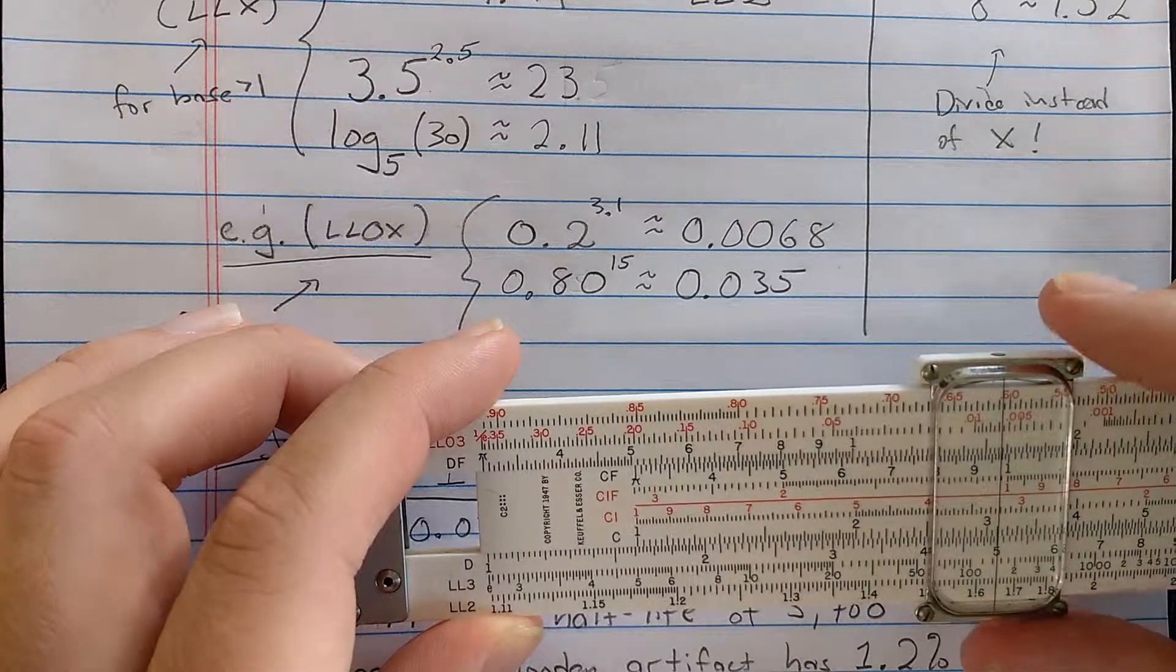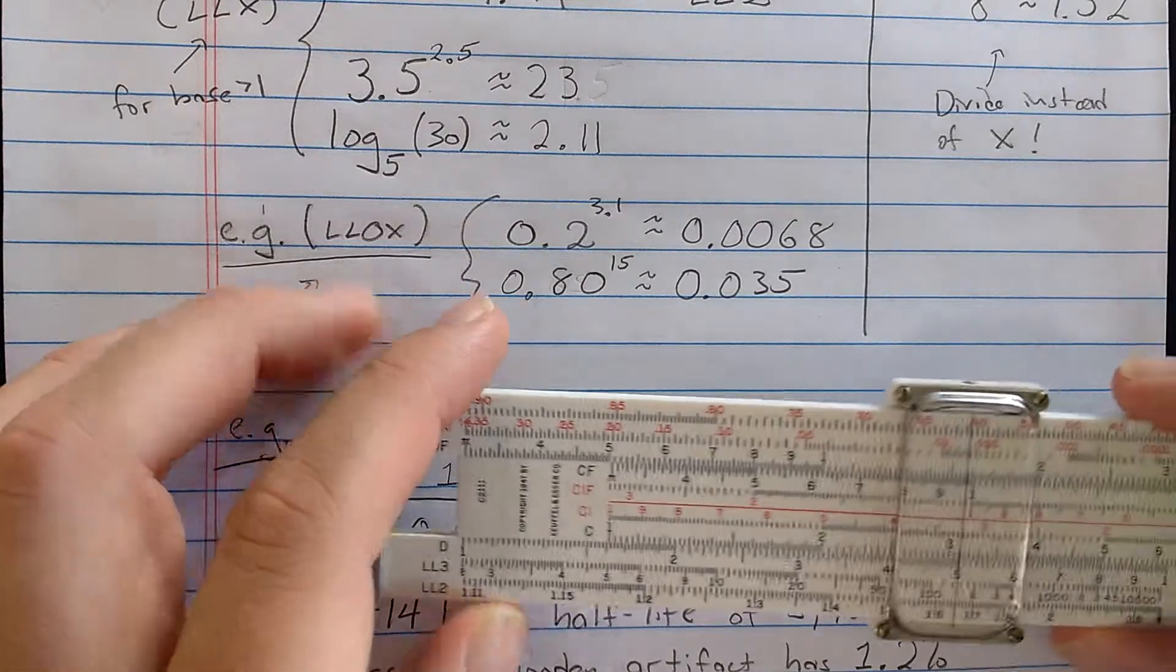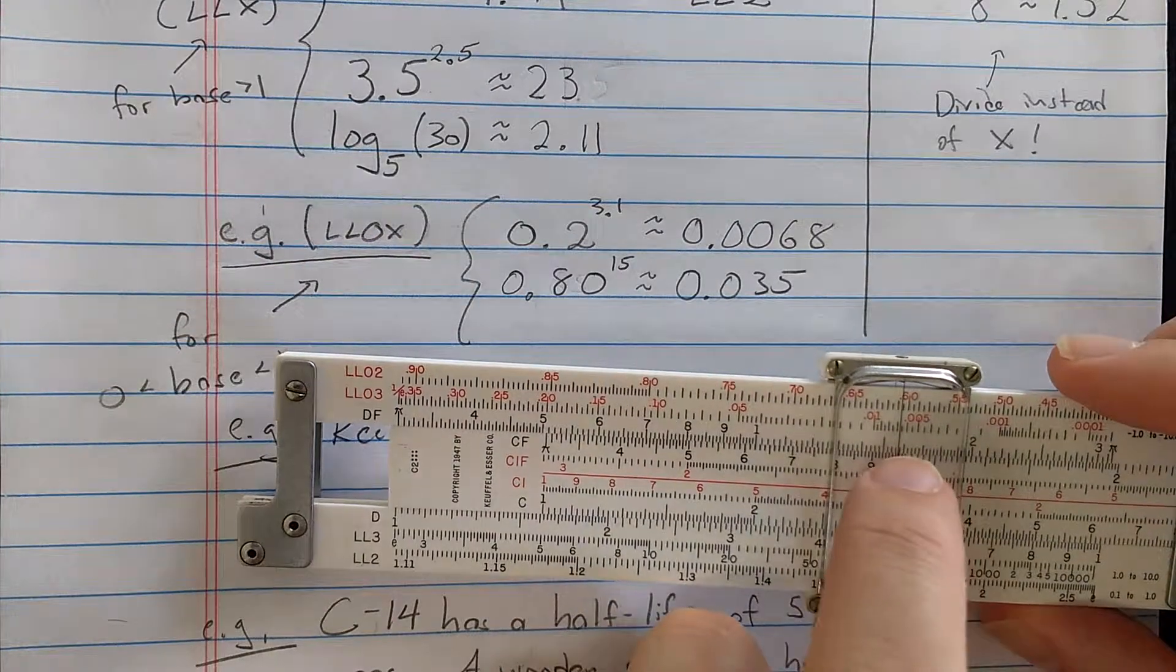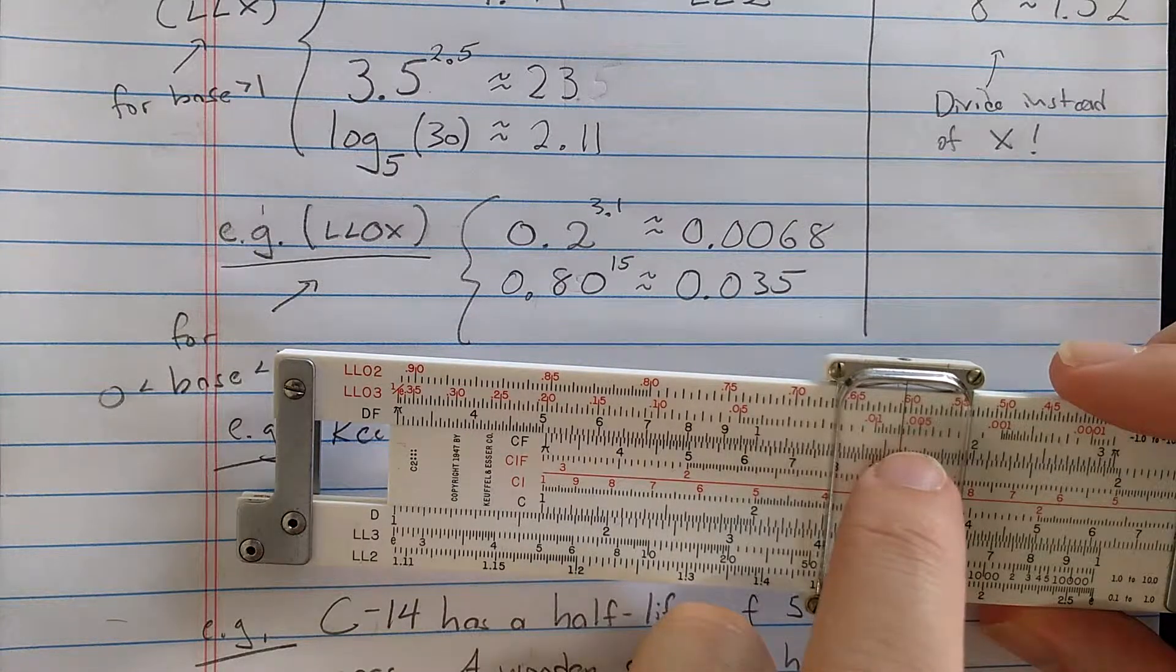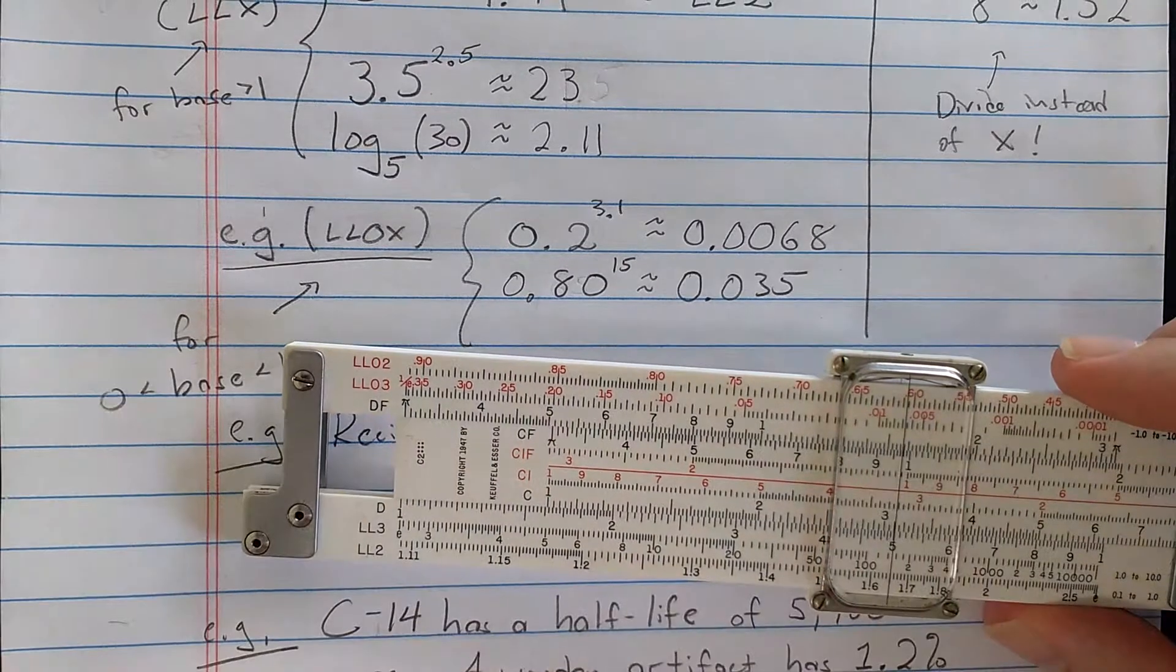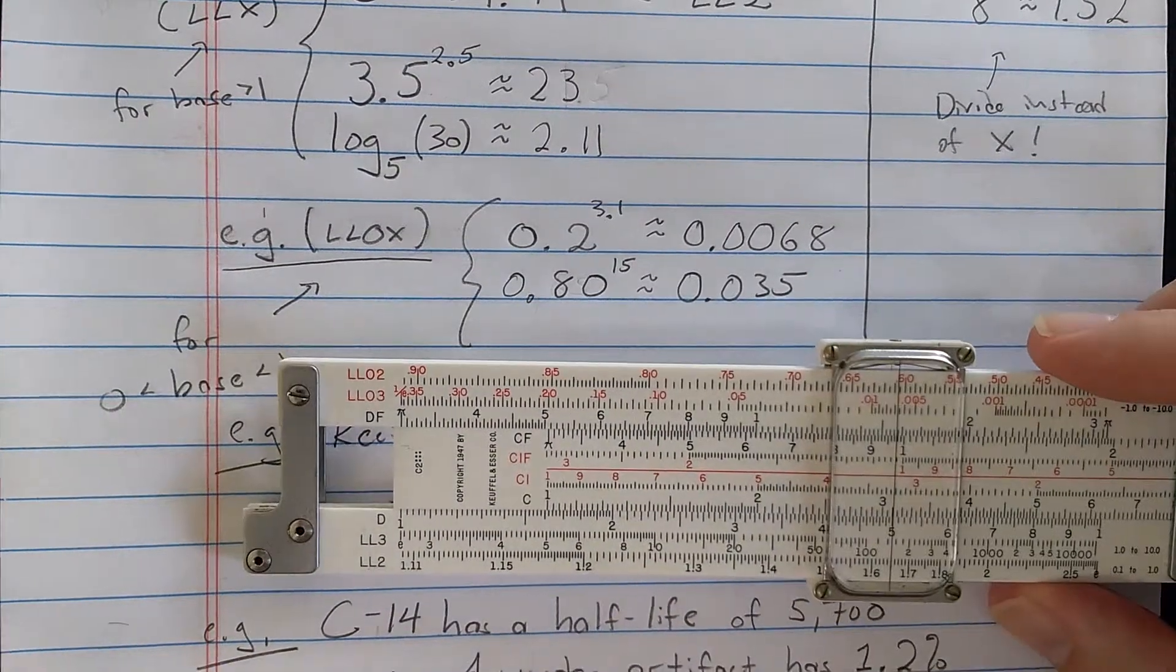Here's 3, 3 here, 3.1 here. And then I read the result up here on LL3. So there's 0.005, 0.006. And I read that as 0.0068.